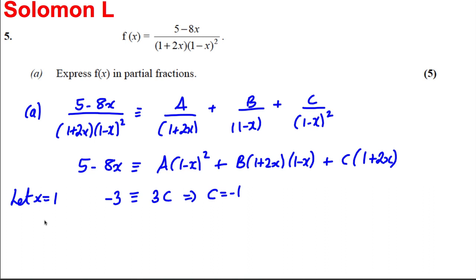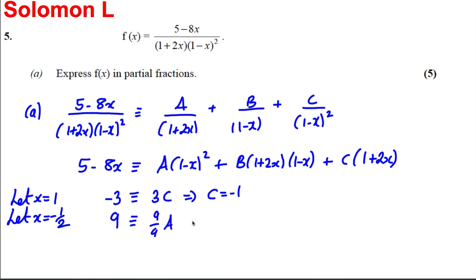Then we let x = -1/2 so that the A and C terms disappear. 8 × (-1/2) = -4, so 5 - (-4) = 9 on the left. On the right we get (1 - (-1/2))² = (3/2)² = 9/4, giving 9 = (9/4)a, so a = 4.